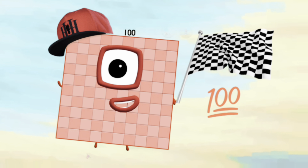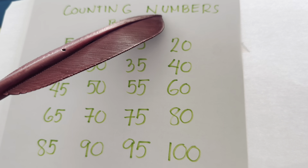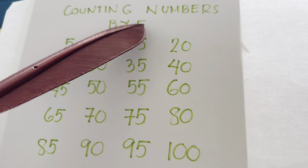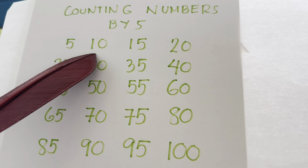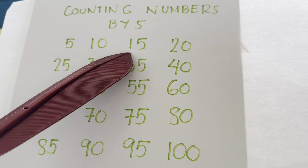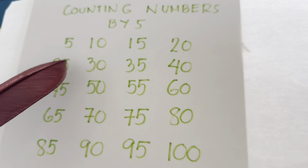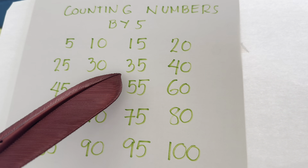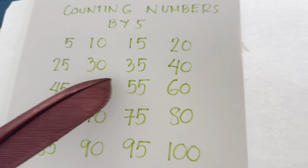Let's do a recap! Counting numbers by 5. 5, 10, 15, 20, 25, 30, 35, 40, 45,